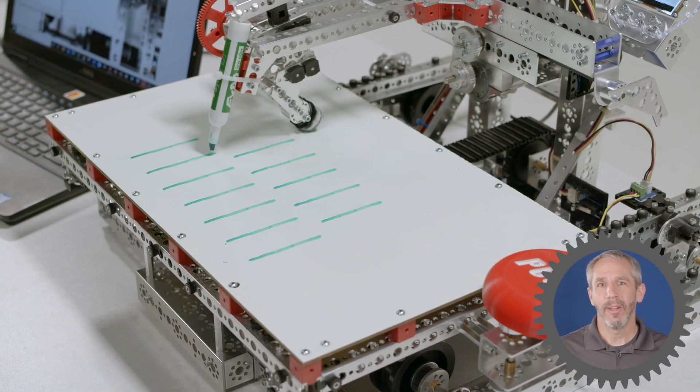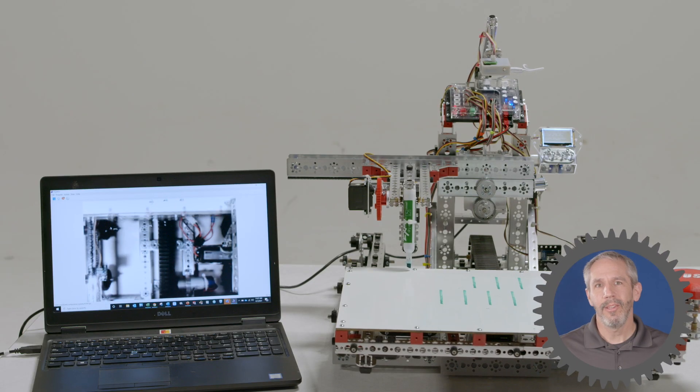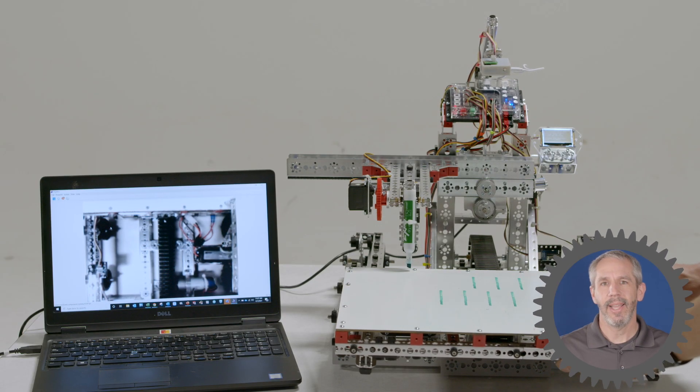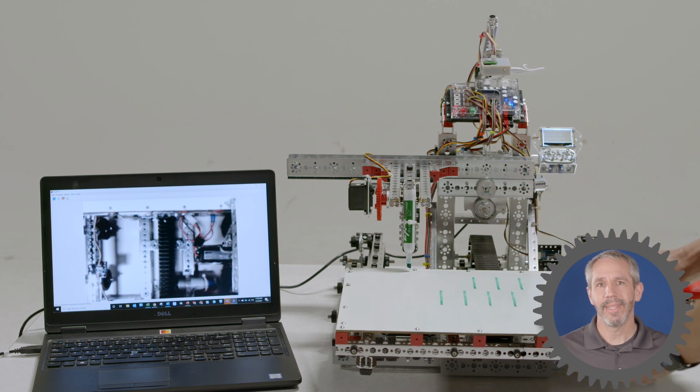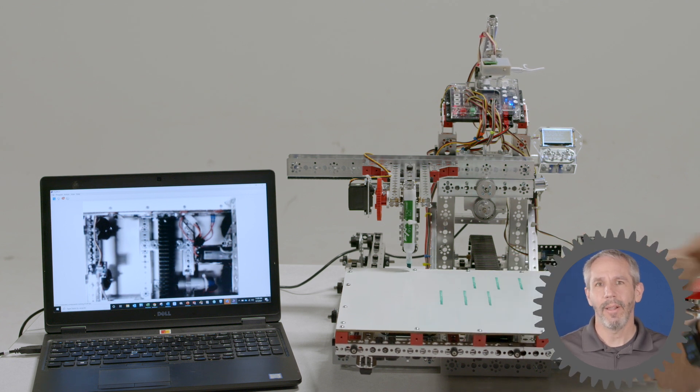Again, there's a lot going on here with this robot, including the use of machine vision to recognize which lines are present and which lines have been erased. But we won't get into all of that here.